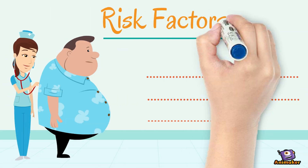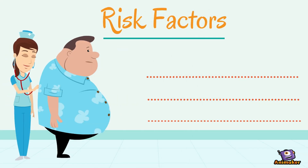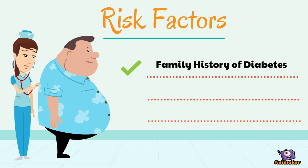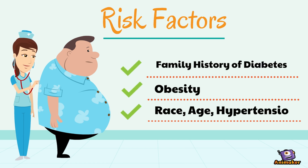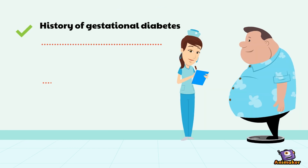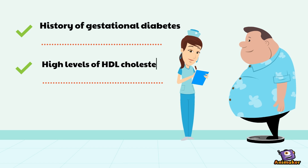Risk Factors: What puts a person at risk for developing diabetes? The family history of diabetes, obesity, race, age, hypertension, history of gestational diabetes, high levels of HDL, and cortisol.